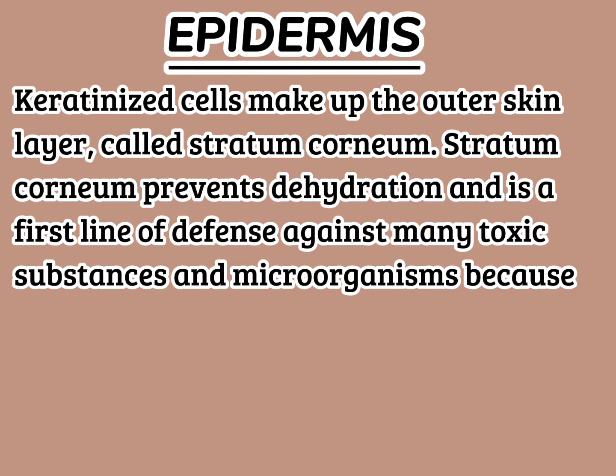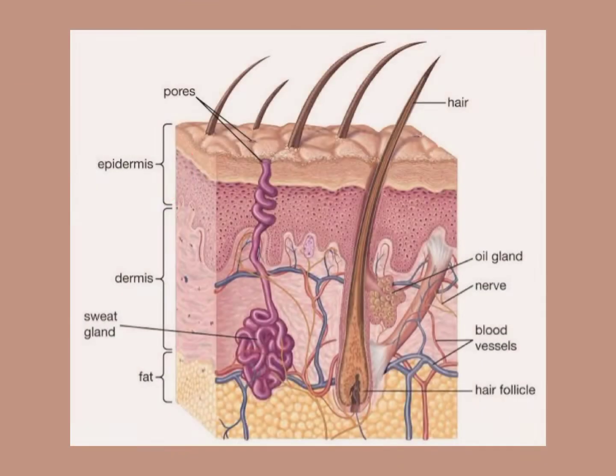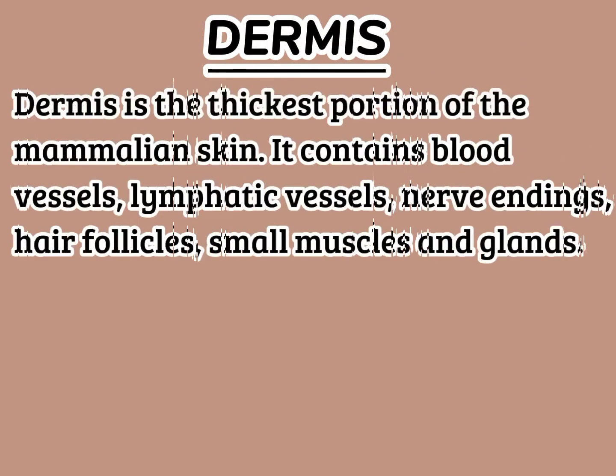The stratum corneum prevents dehydration and is a first line of defense against many toxic substances and microorganisms, because keratin is insoluble in water. Here is the epidermis and dermis. The dermis is the thickest portion of the mammalian skin; it contains blood vessels, lymphatic vessels, and nerve endings.